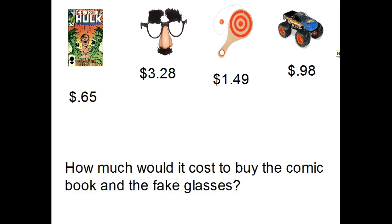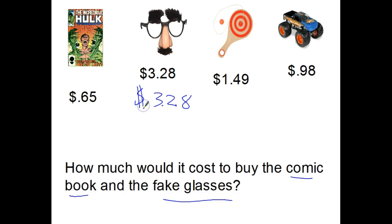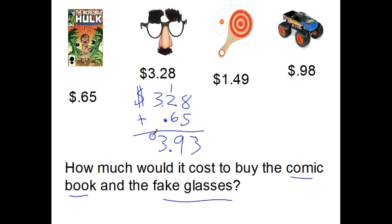How much would it cost to buy the comic book and the fake glasses? The fake glasses cost more at $3.28. The comic book is only $0.65 — at least that's what it said on the cover; that may be an old Hulk one. All we want to know is how much it costs to buy these, so we're going to add the numbers together: thirteen, carry by one, nine — nothing to carry. $3.93. Sounds like a bargain.